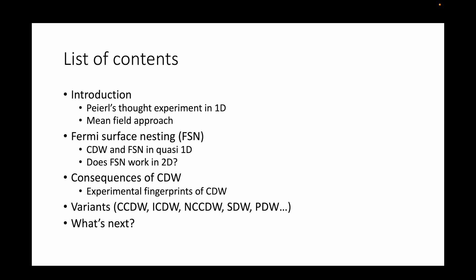This is a list of topics we will cover in this episode. We will start by introducing the history and the derivation of CDW as well as some experimental observations in 1D. Next we will look at the so-called Fermi surface nesting condition and if they hold in 2D. Afterwards we will delve into various experimental methods through which we can identify the CDW states and their variations, so we will briefly touch on those. And finally I will talk about what questions are still unanswered.